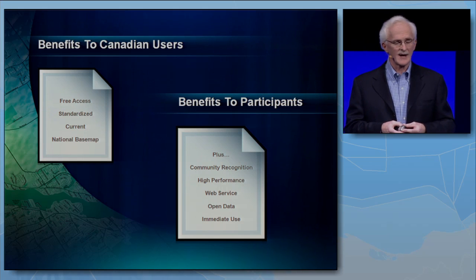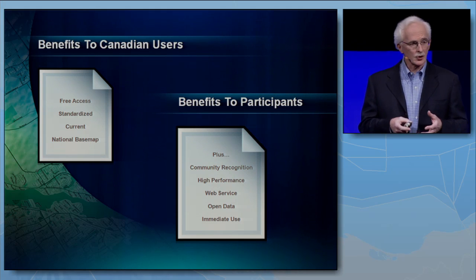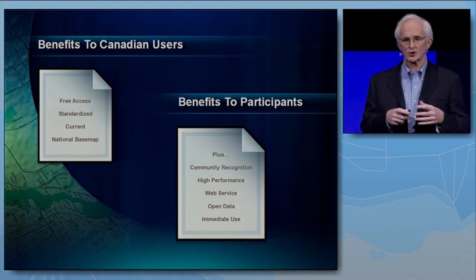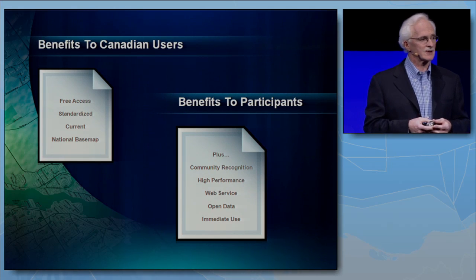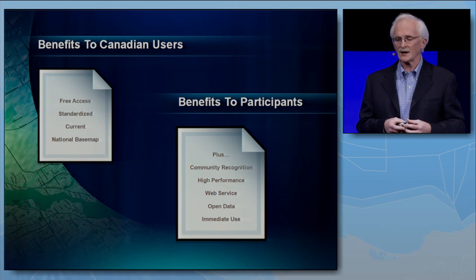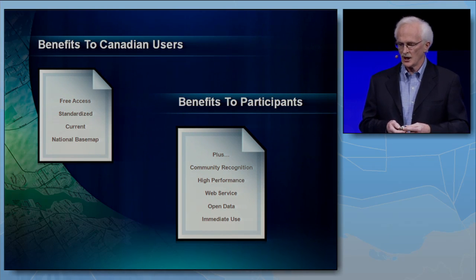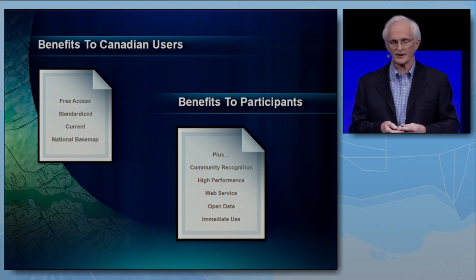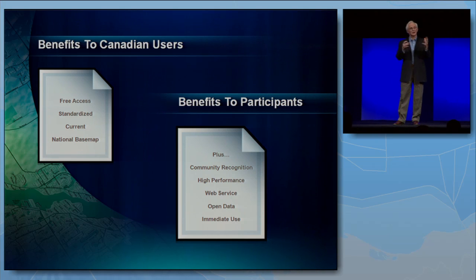There are many benefits that have resulted from the community map in Canada. For our users, they've achieved the objective of having a standardized, current national base map. One of our large users, TransCanada Pipelines, the largest pipeline operator in Canada, said this is tremendous for them to focus on maintaining their operational data without having to worry about a base map for their applications. For the participants themselves, they get their community recognized on a global base map and a high-performance web service they can use for external applications without impacting their own servers. For those part of the open data movement, instead of just putting shapefiles on their website, they can point immediately to the community base map — it's their base map because they're the ones who contributed the data and are keeping it up to date.